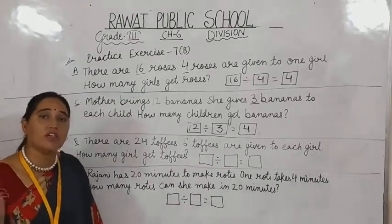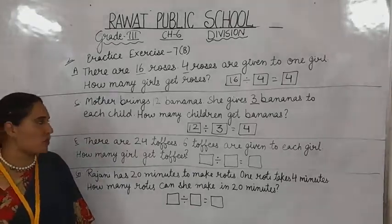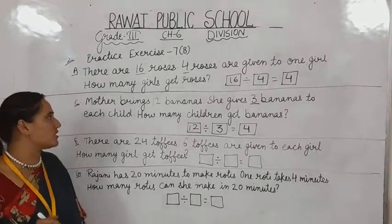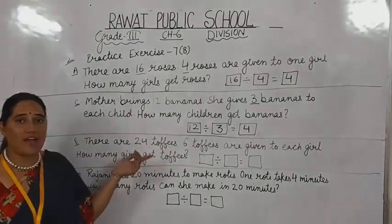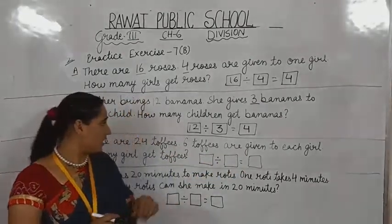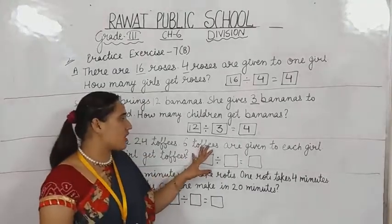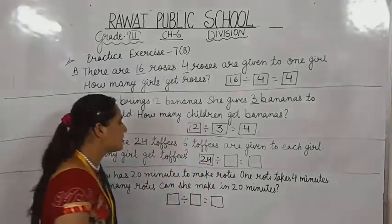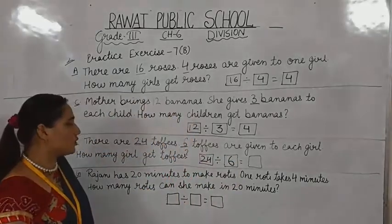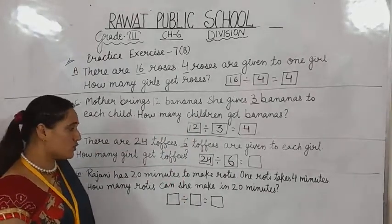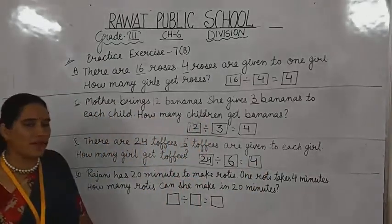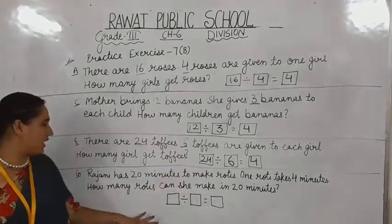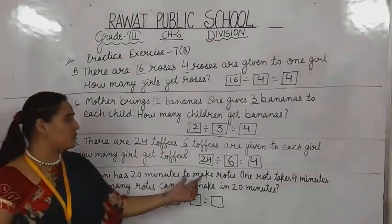We are skipping alternate questions in this session and will do those in another online class. For question 2e: there are 24 toffees. Six toffees are given to each girl. How many girls get toffees? We write 24 in the first box and 6 in the second box. Six fours are 24, so 24 divided by 6 equals 4. Four girls get toffees.